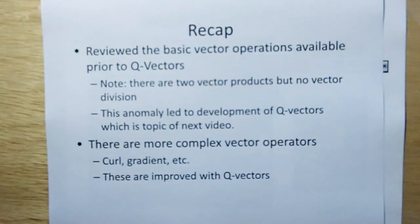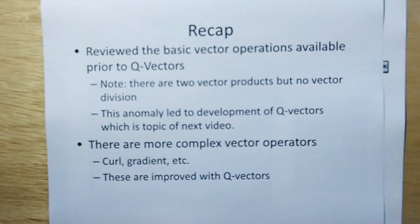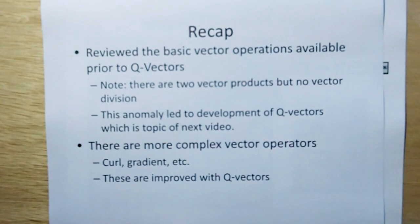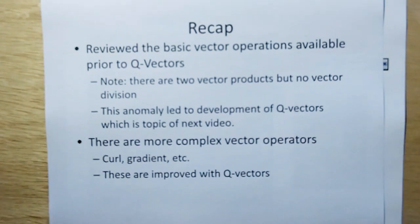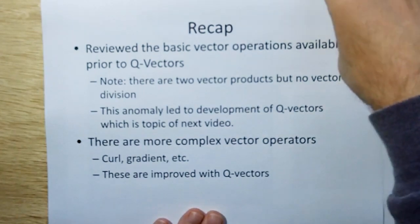So recap. Review the basic vector operations available prior to Q vectors. There are two vector products, but there's no vector division. This anomaly led to the development of Q vectors, which is the topic of the next video. There are more complex operators available to us, like the curl and the gradient. These are improved with Q vectors and they're the topic of later Q vector videos. Thank you.